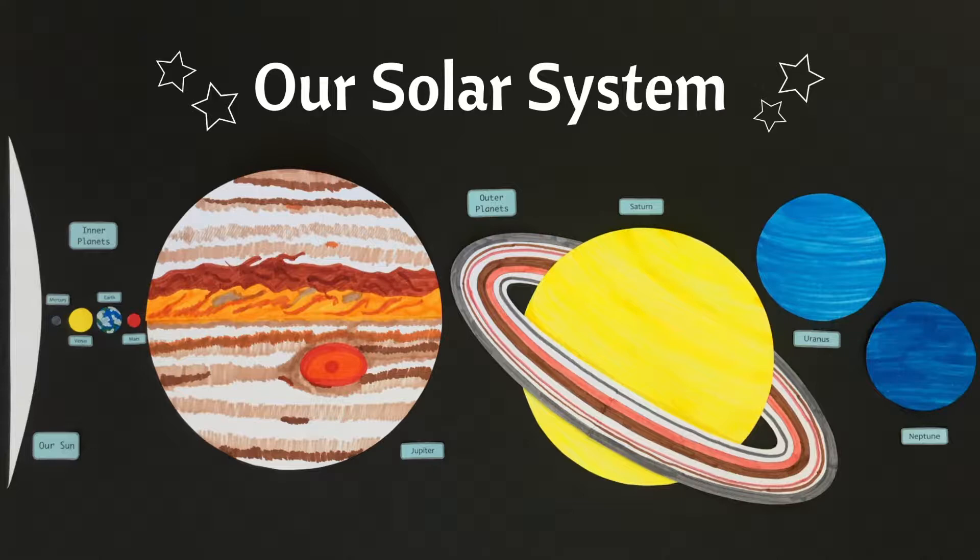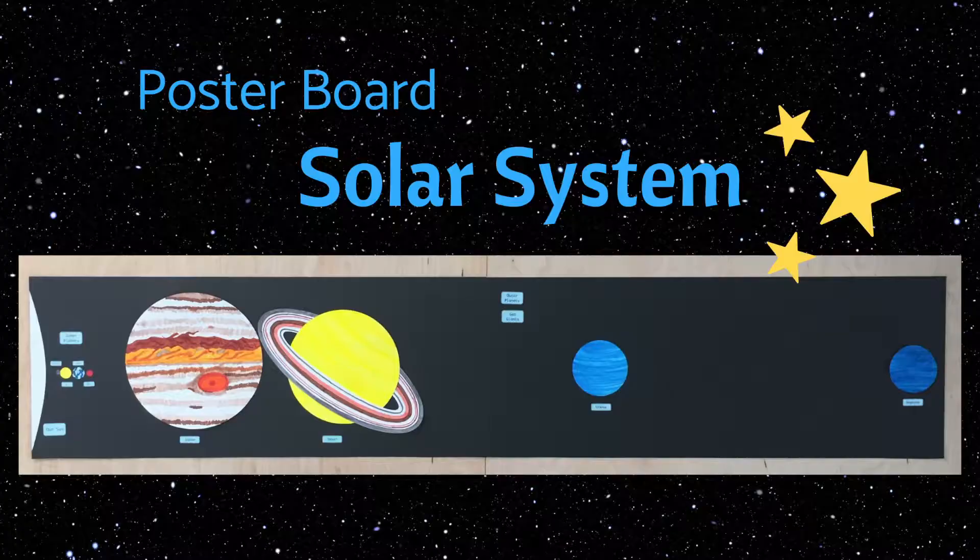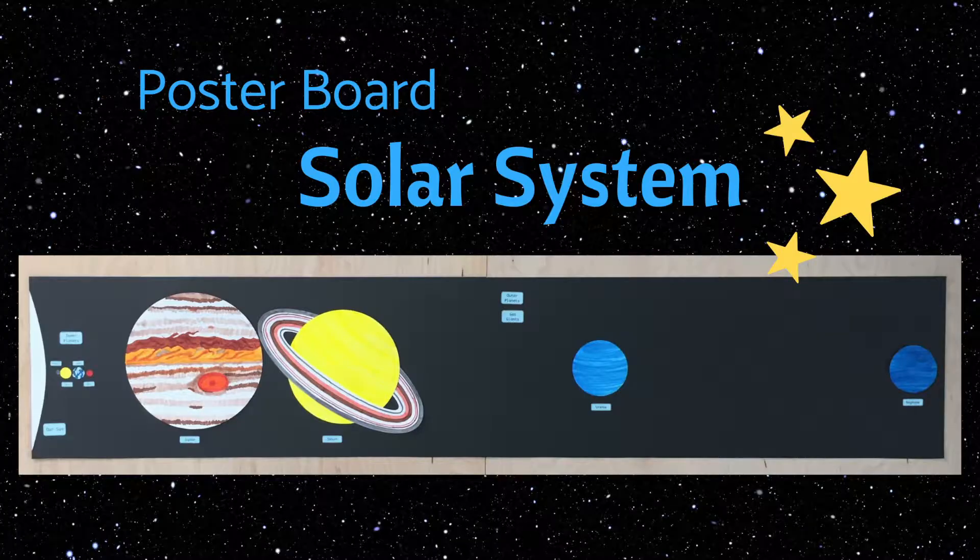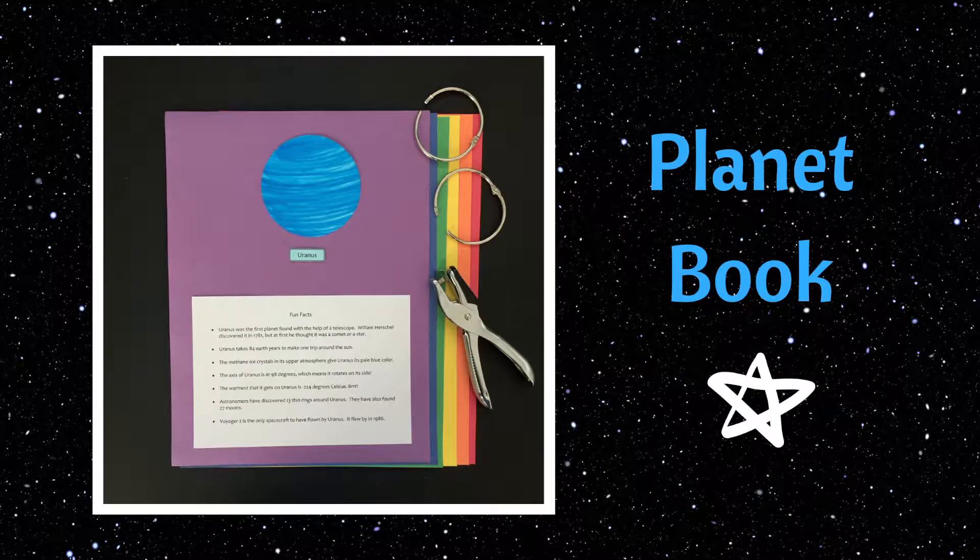We're going to learn about the planets in our own solar system by cutting, gluing, and coloring to create them. When you're finished, you can watch my second video to see how to use these planets to create some different projects that you see here.